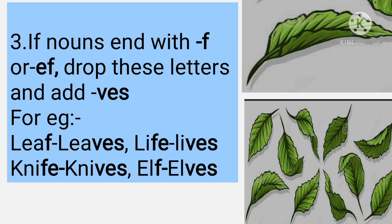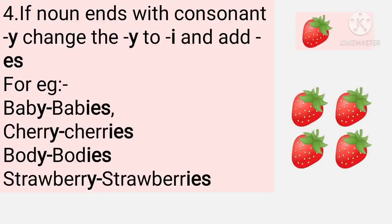Fourth, if a noun ends with a consonant and y, change the y to i and add -es. For example: baby — the ending is y, so the plural is babies, spelled b-a-b-i-e-s. Cherry → cherries, body → bodies, strawberry → strawberries.